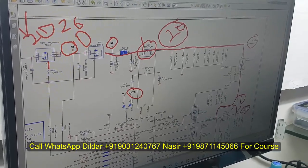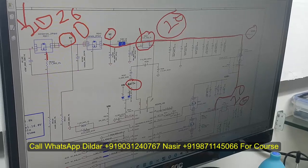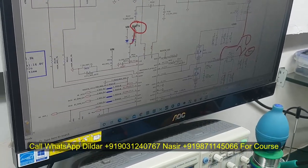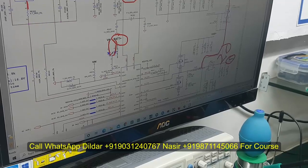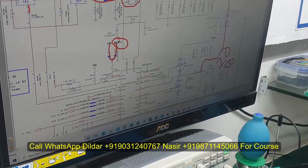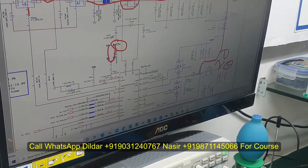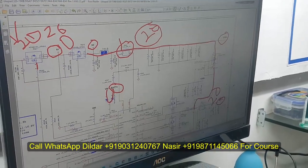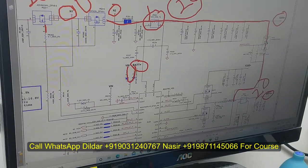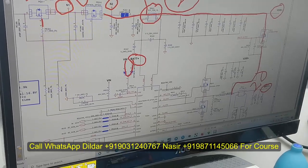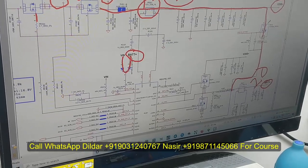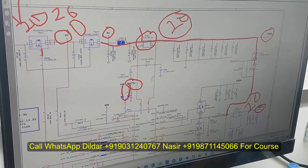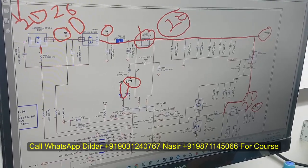Why do we have 20 volts on this point? The reason: if this diode is short — let's suppose this diode is short — what will happen? The 20 volts will enter here and go back on this point. This 20 volts will reach on this point, and through this path and the diode mode, it will reach on this point. The same thing is happening here.